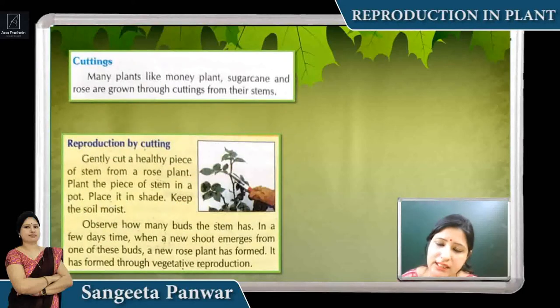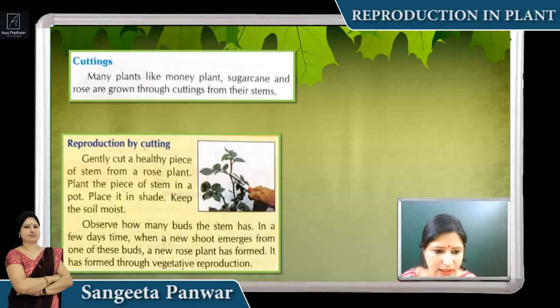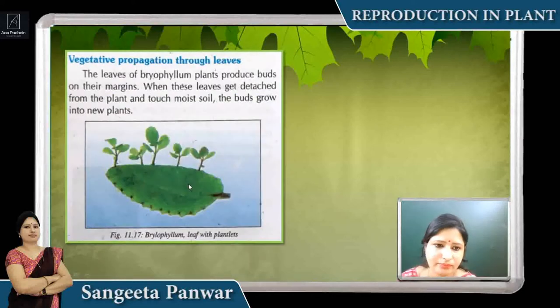Cutting is a very simple method. Like money plant and sugarcane — we cut a portion between the nodes and internodes, and if we place it in soil, it converts into a new plant.